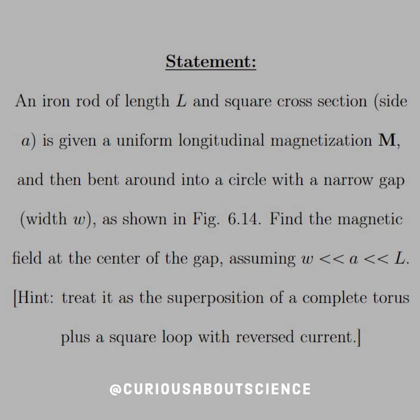The statement reads: an iron rod of length L and square cross-section, side A, is given a uniform longitudinal magnetization M, and is bent into a circle with a narrow gap with W, as shown in the figure. Find a magnetic field at the center of the gap, assuming that W is much, much less than A, which is much, much less than L.